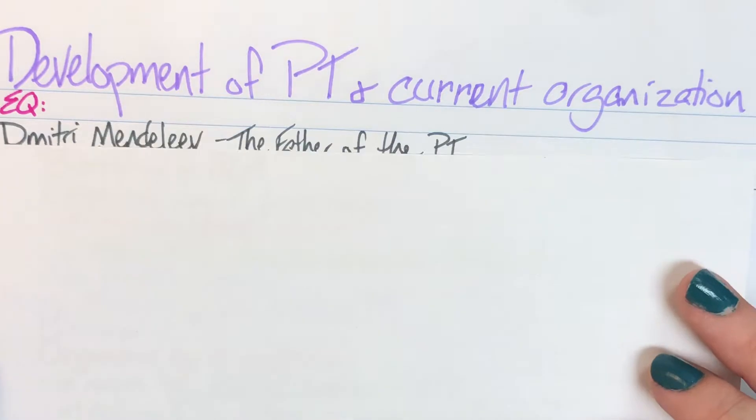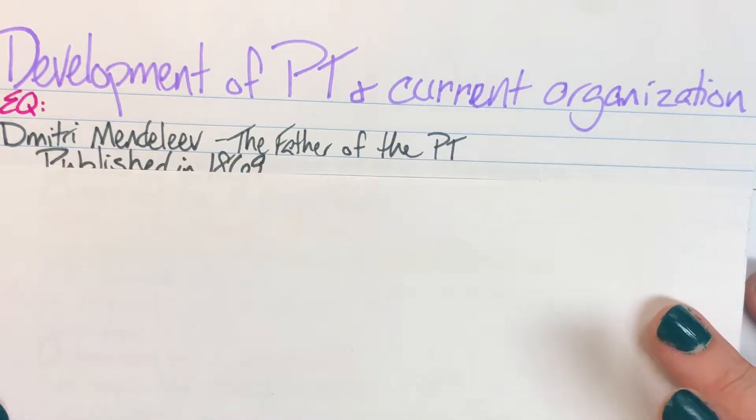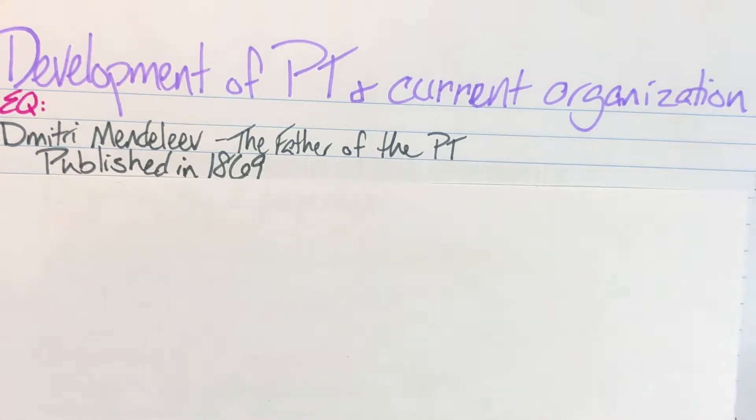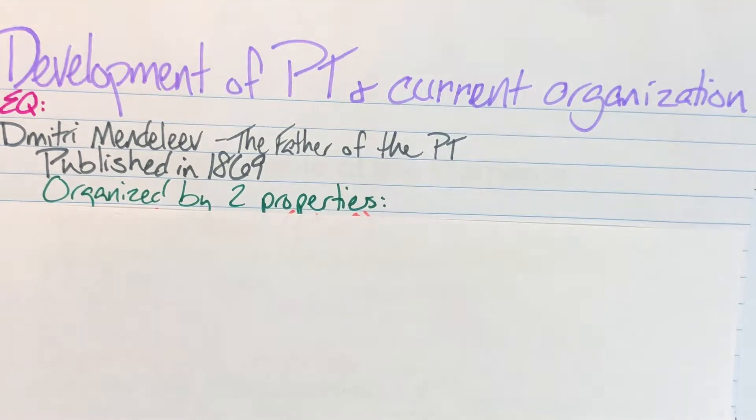First we're going to talk about Dimitri Mendeleev. He's who we consider to be the father of the modern Periodic Table. His Periodic Table was published in 1869 and he was the first to organize all of the elements in such a way that it could predict missing elements. And he did this by organizing his table by two main properties.